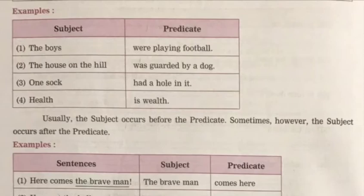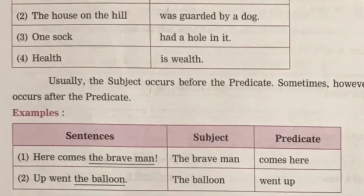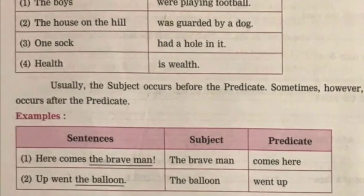'Health is wealth.' What is health? 'Is wealth' is your predicate. So here we saw that the subject comes first and the predicate comes afterwards, but it won't be that way every time. You have to ask 'who' for subject and 'what' for predicate. 'Here comes the brave man.' Who comes? The brave man. So 'here comes' is your predicate. 'Up went the balloon.' Who went up? The balloon. 'Went up' is your predicate.